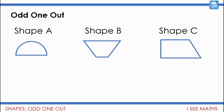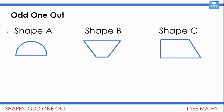One last example - shape A, shape B, or shape C - which one's the odd one out? Can you think of different reasons why each one could be? Pause the video and have a go. It's got to be shape A - it's got a curved side while the others have straight sides. No wait - shape B is the odd one out because it's got pairs of sides the same length and two acute angles. Actually shape C is the odd one out, because shape A has a line of symmetry and so does shape B, but shape C doesn't have any lines of symmetry.